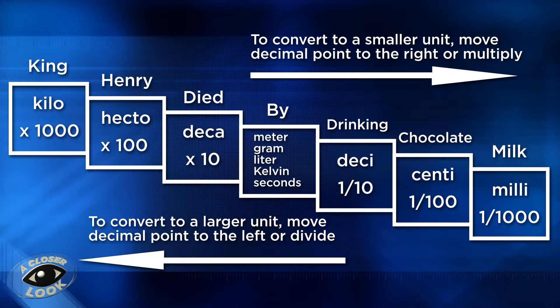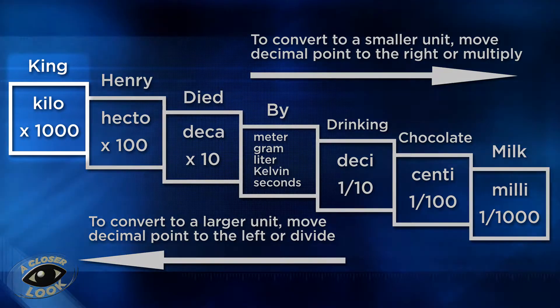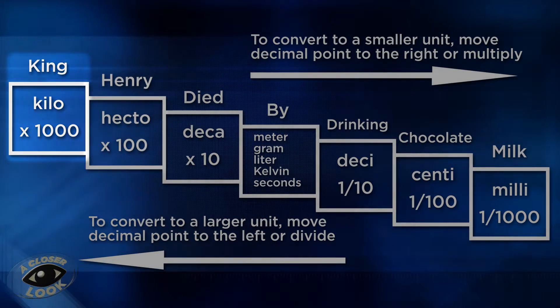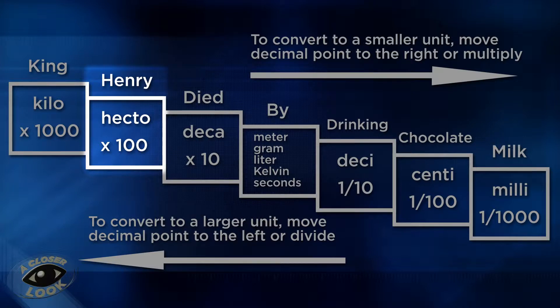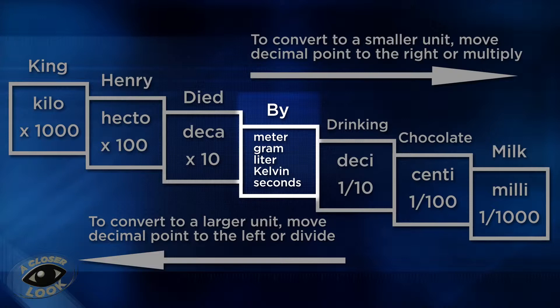Here is a little mnemonic to help you remember metric prefixes when you are doing conversions: King Henry died by drinking chocolate milk. King represents kilo, Henry is hecto, died is deca.